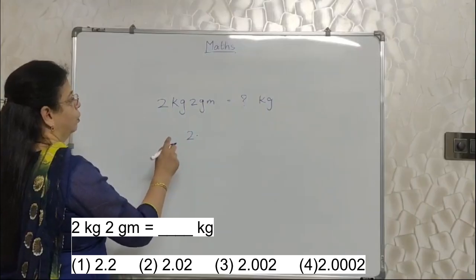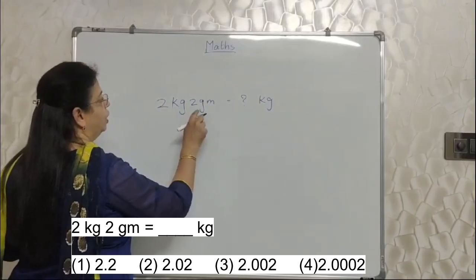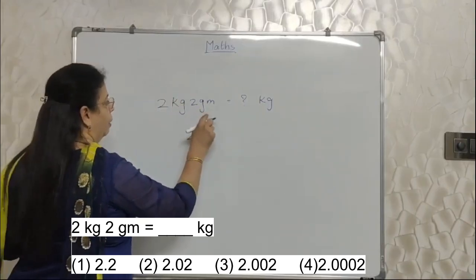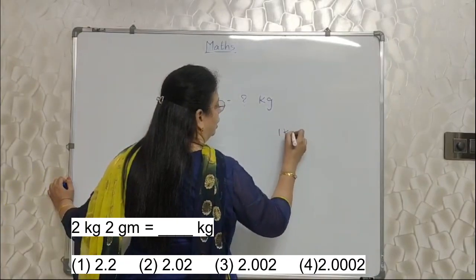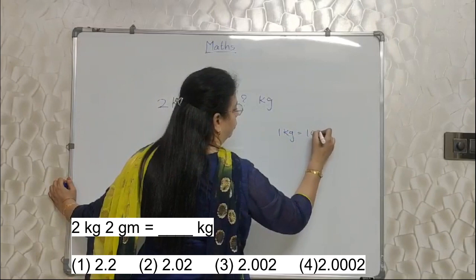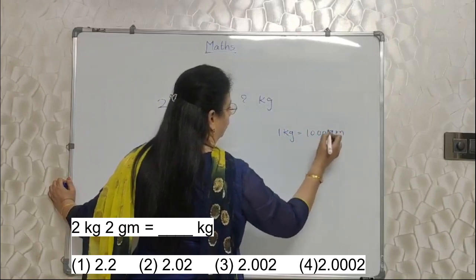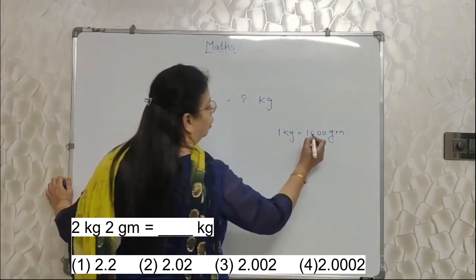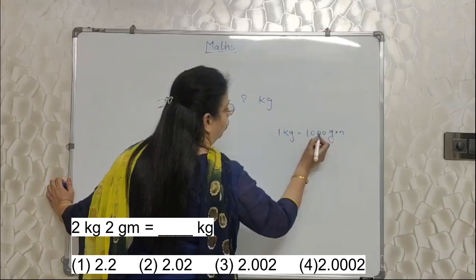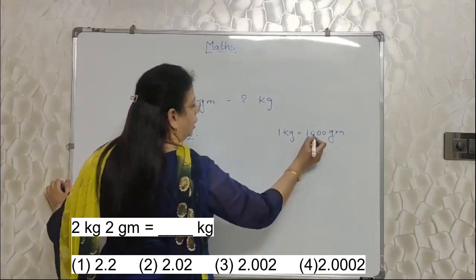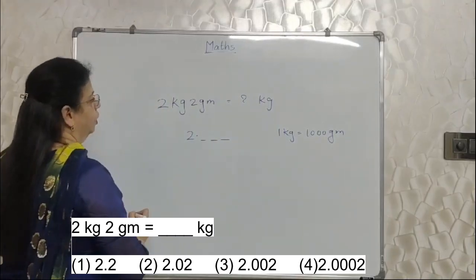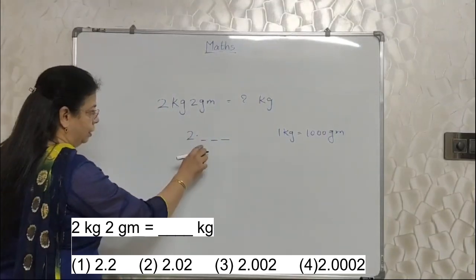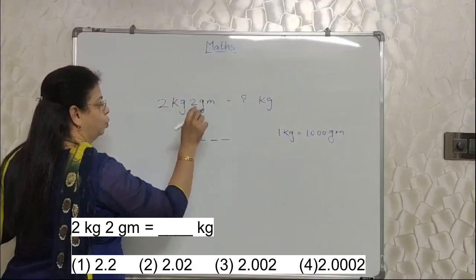Now what can be done? First question you need to ask, what is the relation between kg and gram? How many grams will make 1 kg? 1 kg is 1000 grams. That everybody knows. Now these 0s will help you to write this 2 here. 3 0s means here there are 3 places.